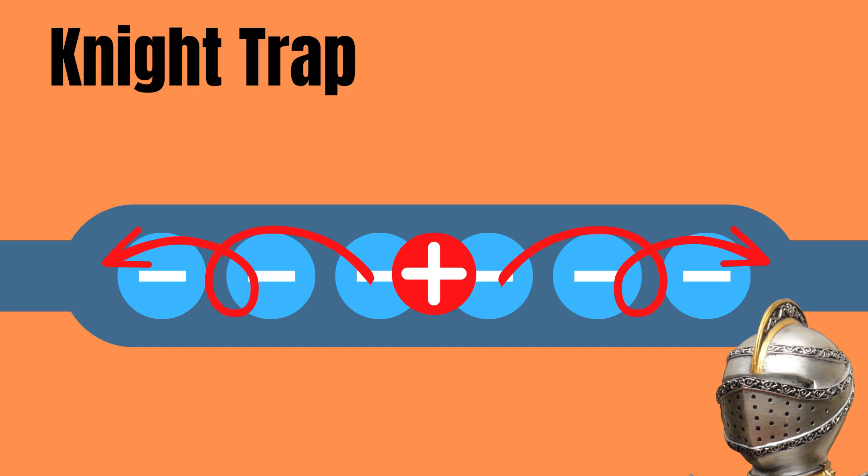By measuring the frequency of this back and forward motion along the central axis, we are able to determine the mass to charge ratio of the ions.